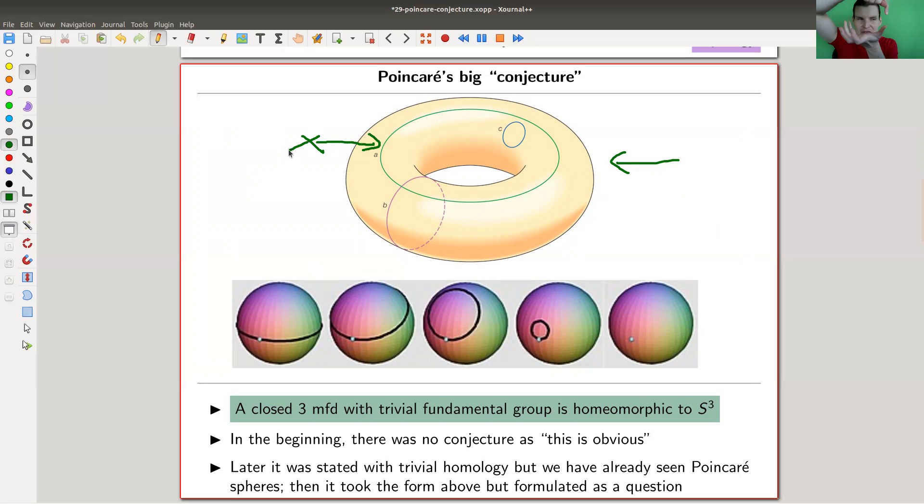You can already see the A loop doesn't shrink - it goes around the hole of the torus so it always gets stuck. The B loop is even easier to see - it doesn't shrink, it goes around the ring part of the torus.